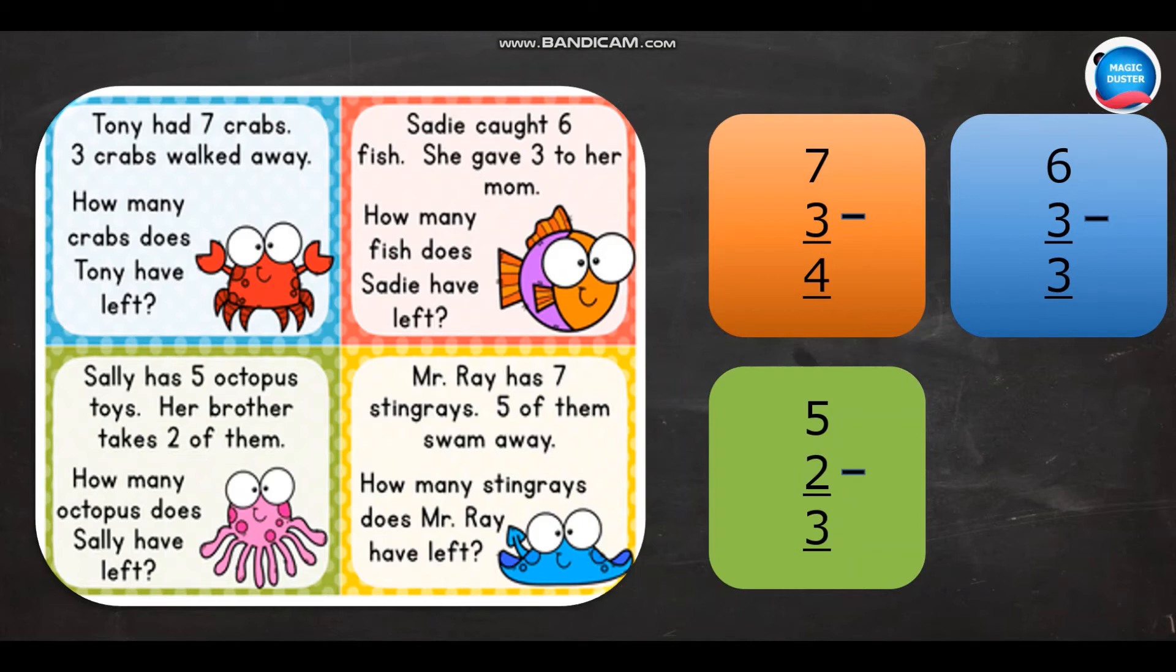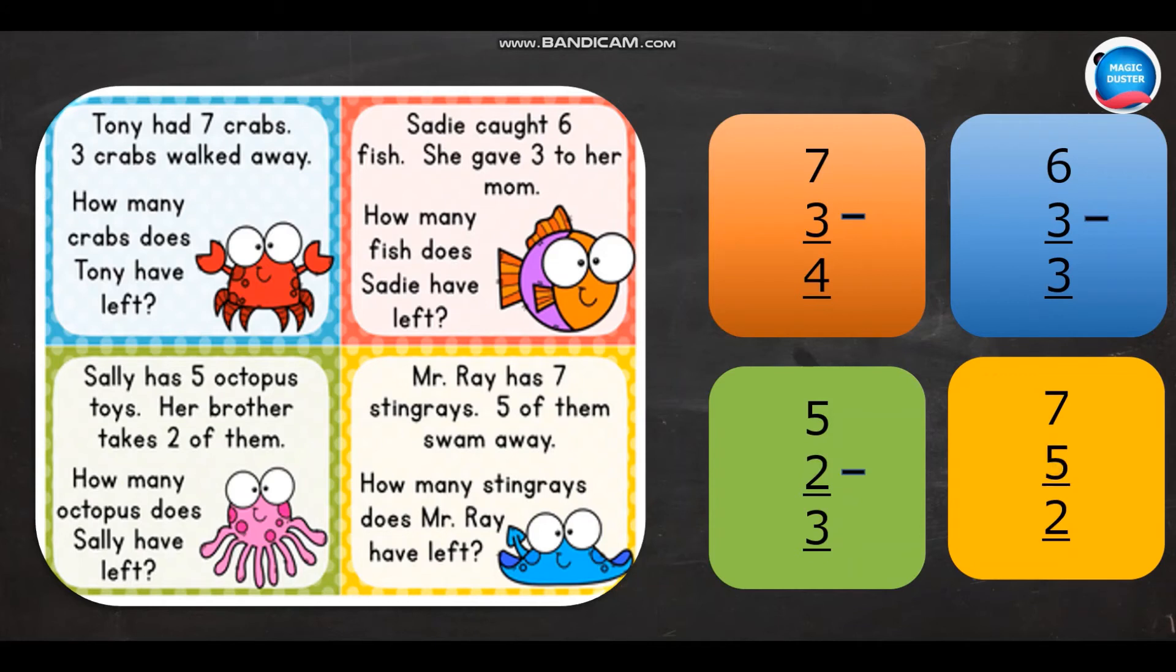Then, the last one. Mr. Ray has seven stingrays. Five of them swam away. How many stingrays does Mr. Ray have left? To find out, I should write the larger number above the smaller number below. And we know if five is subtracted from seven, the answer must be two. And children, when you are doing any operation of math, don't forget to put the symbol.